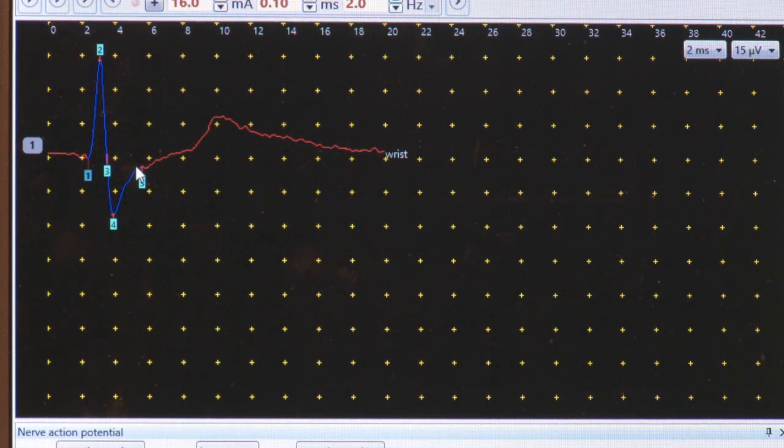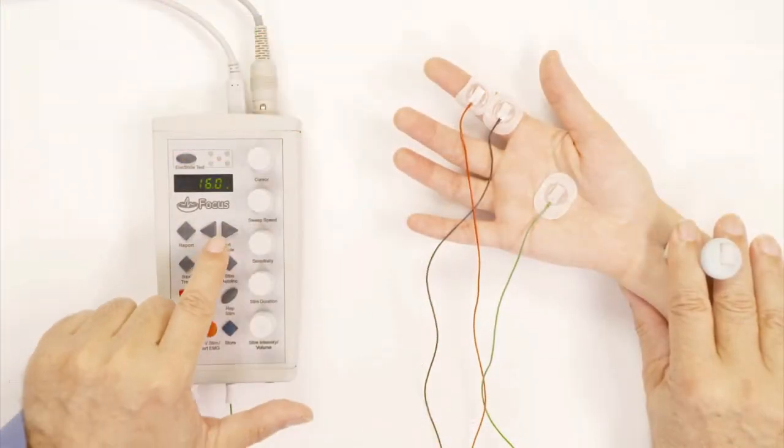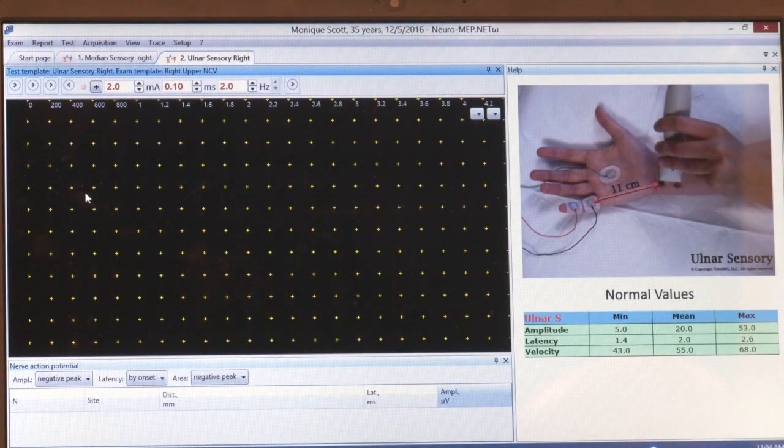So now I accept that. And in order to go to the next nerve, I press the next here. And you will see that the ulnar sensory comes.